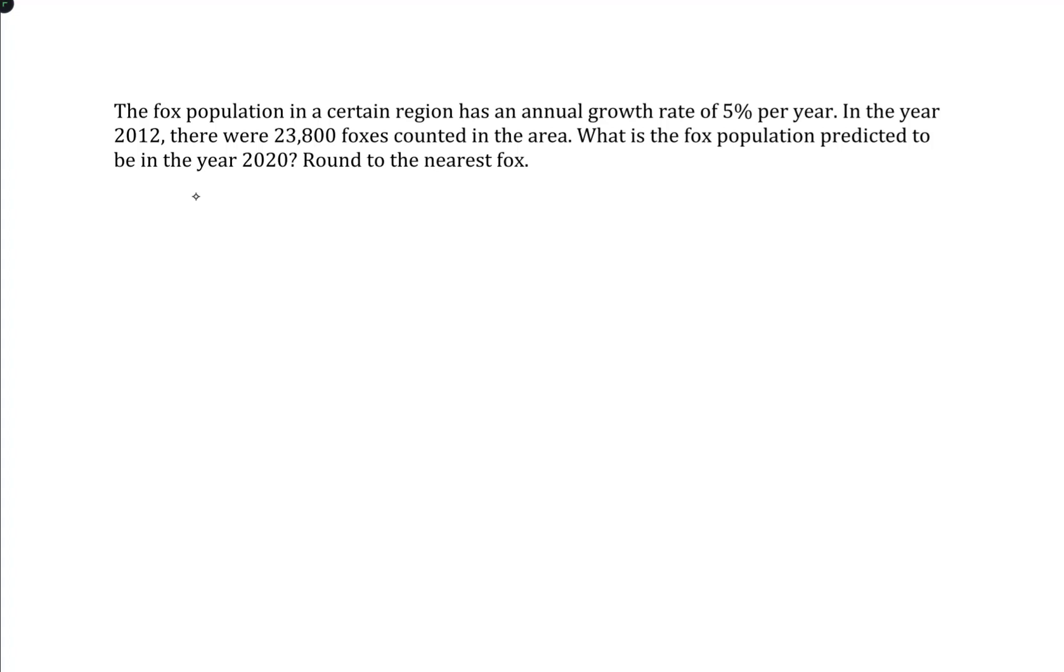So, what we can do in that situation is we can say the amount of foxes after the number of years has passed that we're interested in, is going to be the initial amount. In 2012 there were 23,800 foxes. And then we need to determine how that gets changed over time.